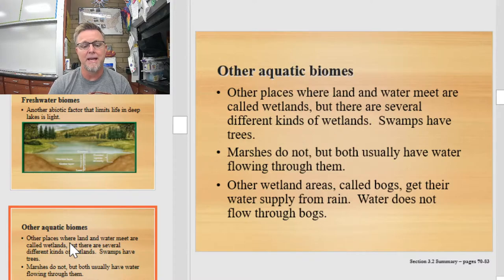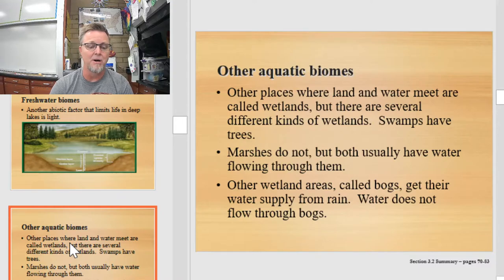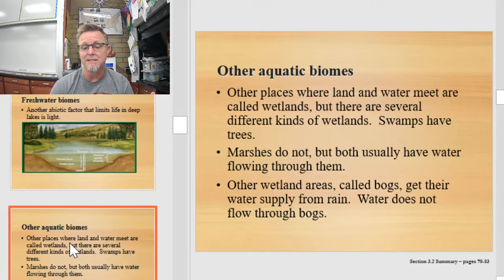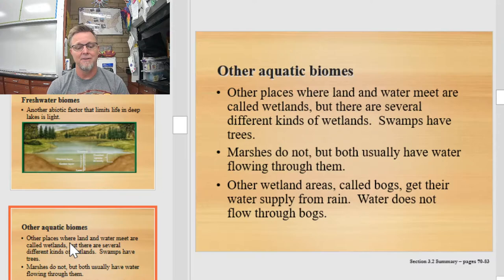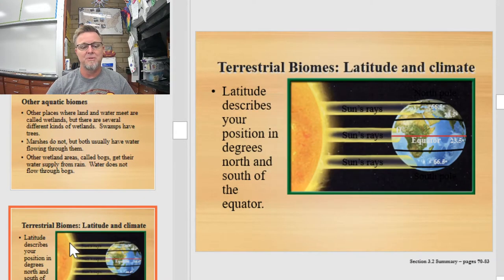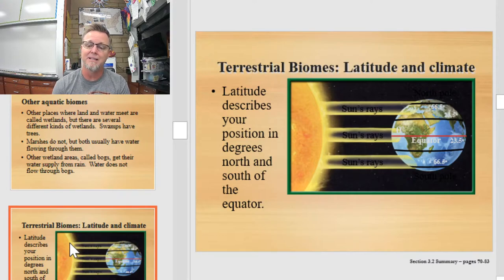Other places where land and water meet are called wetlands. Wetlands are different from estuaries because wetlands don't often have an intermingling of fresh and salt water — it's basically freshwater creating swamps and marshes. There are several different kinds of wetlands: swamps have trees, marshes do not, but both usually have water flowing through them. Other wetland areas called bogs get their water supply from rain — the water does not flow through a bog, it simply sits there and stagnates.